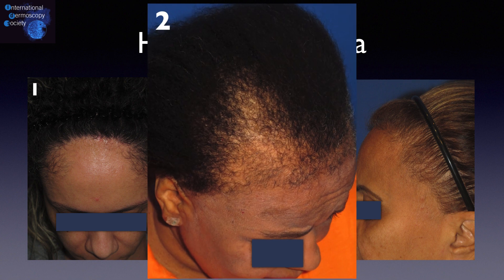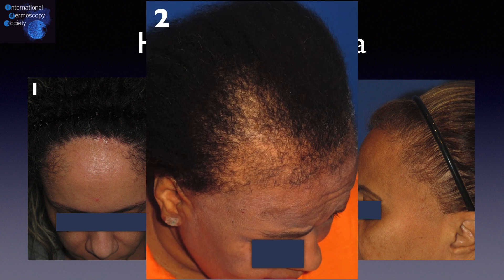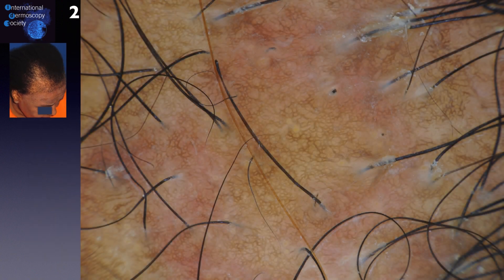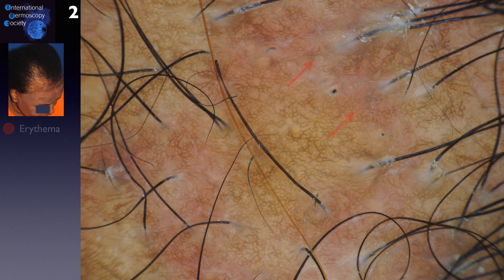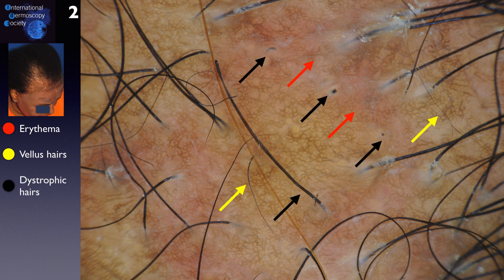In the second case, we have hair loss in the frontal area with many vellus hairs and no eyebrow involvement. From tricoscopy, we can highlight the presence of erythema, some vellus hairs, dystrophic hairs, and many hair casts around the proximal hair shaft, reflecting the physiopathology of this disease.